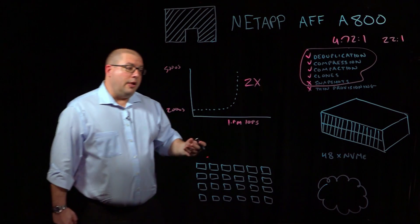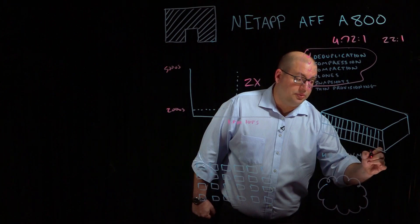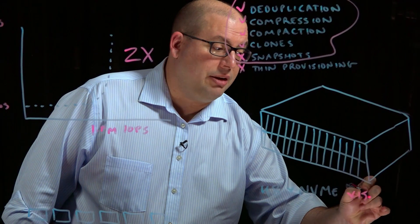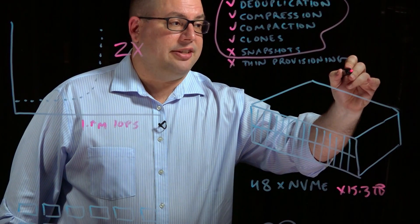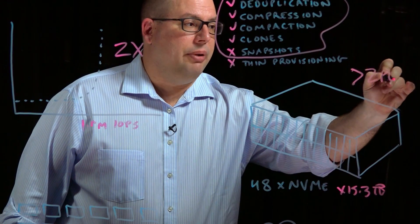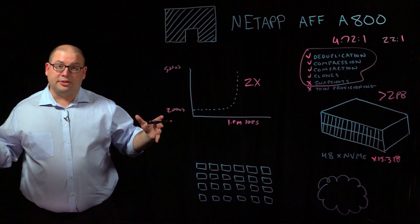With that storage efficiency, the A800 can support 48 NVMe internal devices within 4U. And at 15.3 terabytes each, that yields an effective capacity of greater than 2 petabytes within 4 rack units. That's an amazing amount of data within a small amount of space.